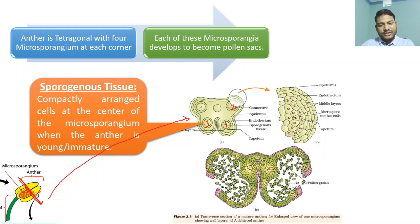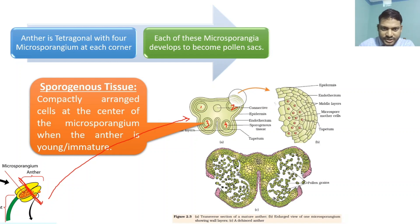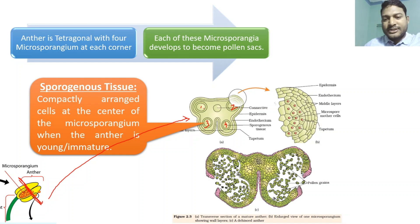What is sporogenous tissue? In the center, you have the sporogenous tissue. Sporogenous tissue is compactly arranged cells at the center of the microsporangium when the cell is young or immature.